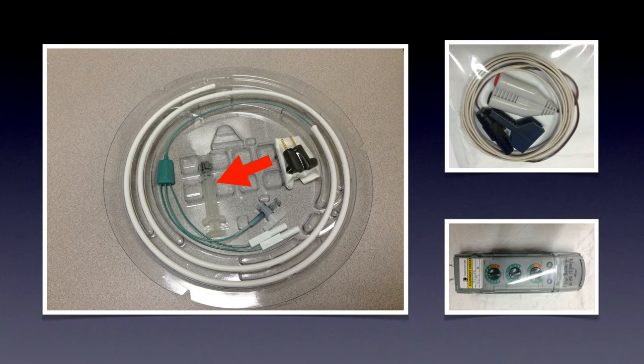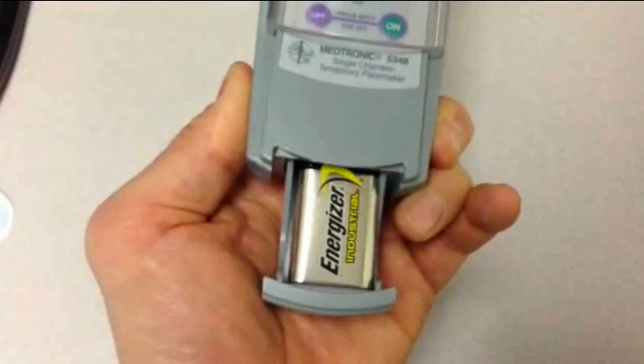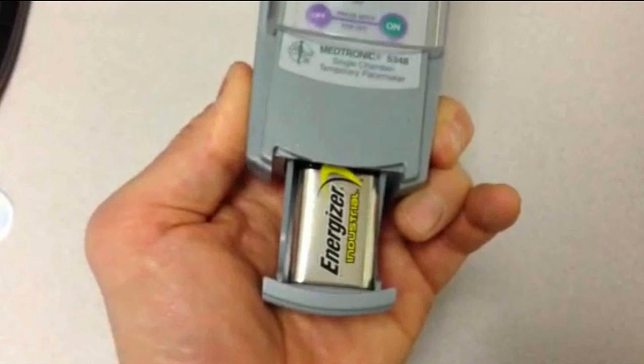The battery goes in the bottom of your pacing generator — always put in a fresh battery. To open the battery door, you must press two buttons simultaneously on the side of the generator, which slides the door out to reveal the nine-volt battery. Everything on the temporary transvenous pacing generator requires a deliberate action, because you don't want anything accidentally changing the rhythm, rate, or disconnecting the device.